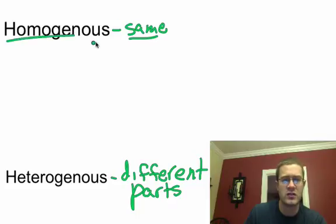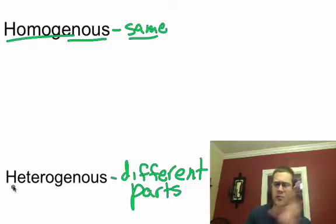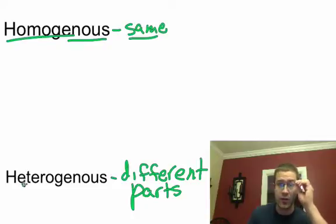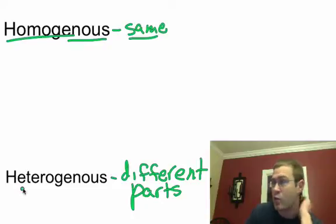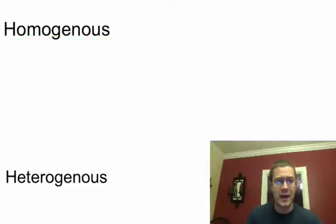Whereas heterogeneous — you can see the parts. You would think about things like fruit salad or Chex party mix. With homogenous mixtures, they look as one, but they're separate at a much smaller level that we can't see with the naked eye, meaning without the aid of a microscope.